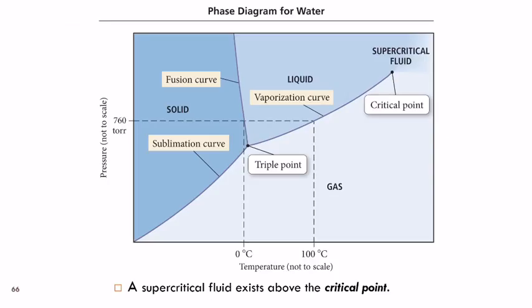Here's a phase diagram for water. Here's our pressure, and this is not to scale, but here's 760 torr, atmospheric pressure. Here we have temperature, also not to scale—zero degrees Celsius and 100 degrees Celsius.